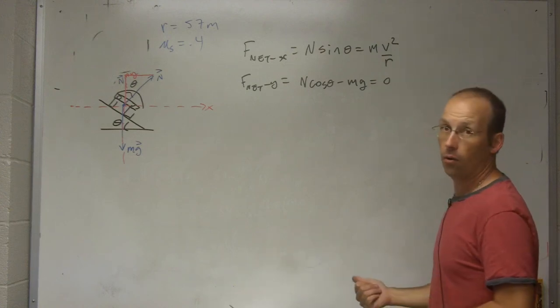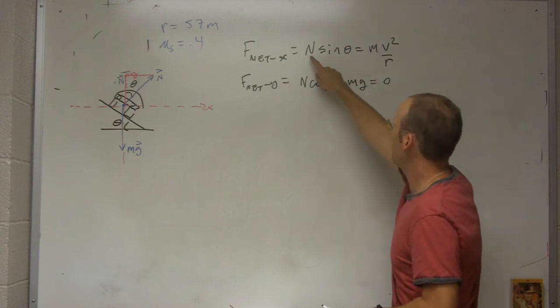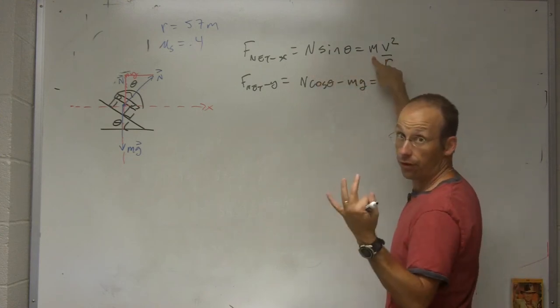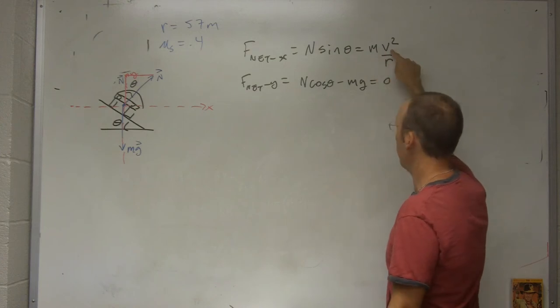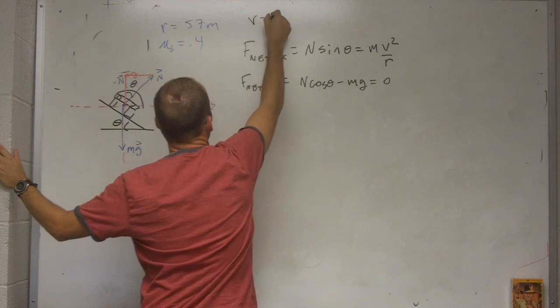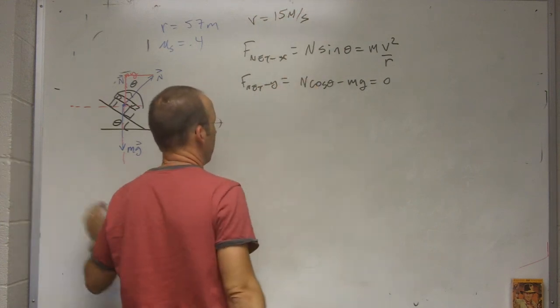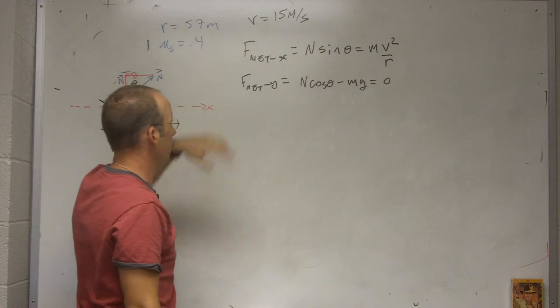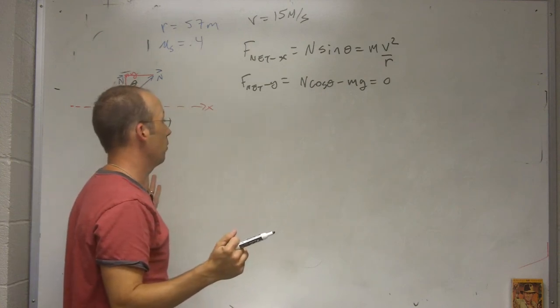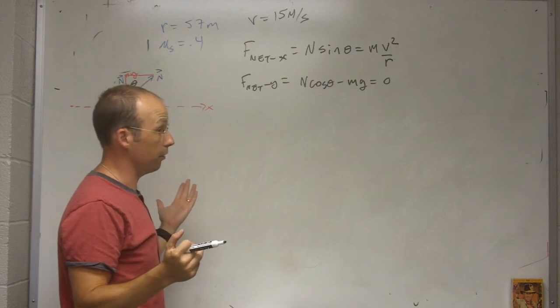Okay, what don't I know? I don't know n, I don't know theta, I don't know the mass. I have three things I don't know. I know the velocity of, I said that was going to be 15 meters per second. And I do know the radius of 57 meters. So, what do I do? That's three variables and two unknowns.